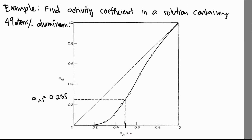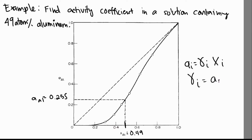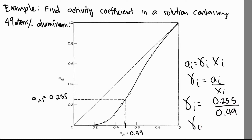The mole fraction X_Al is equal to 0.49. From our equation aᵢ = γᵢ · Xᵢ, γᵢ will be equal to aᵢ over Xᵢ. So γᵢ = 0.255 / 0.49. From the graph, we can see we have a negative deviation since γ is less than 1 — it is equal to 0.520.